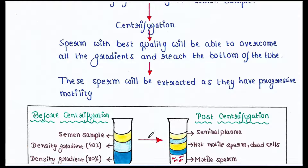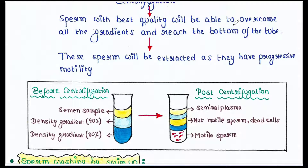After centrifugation, sperm with the best quality will overcome all the gradients and reach the bottom of the tube — these are the motile sperm with progressive motility, which are extracted. Post-centrifugation, the tube contains seminal plasma at the top, then 40% media with non-motile sperm and dead cells, then 80% media at the bottom containing the motile sperm.